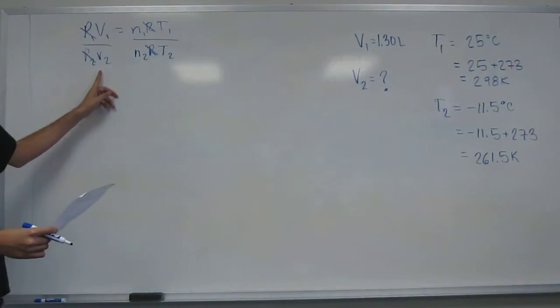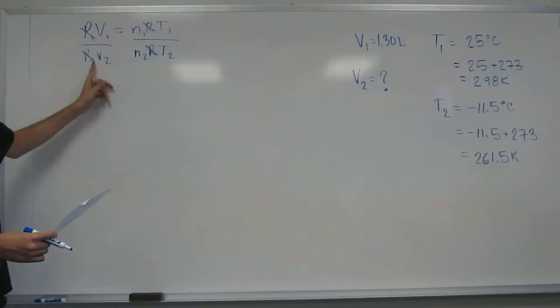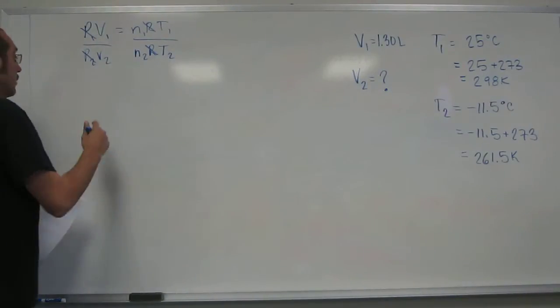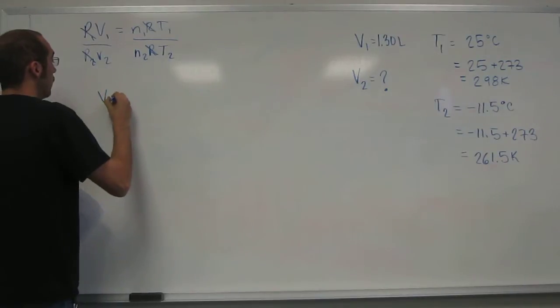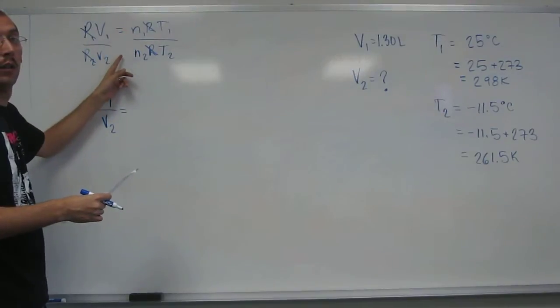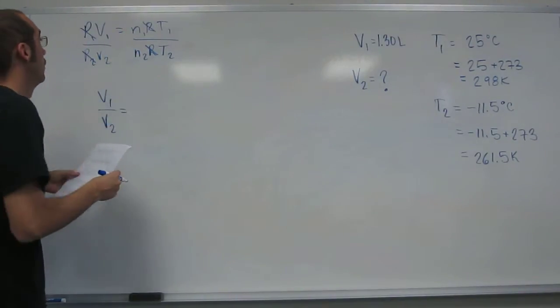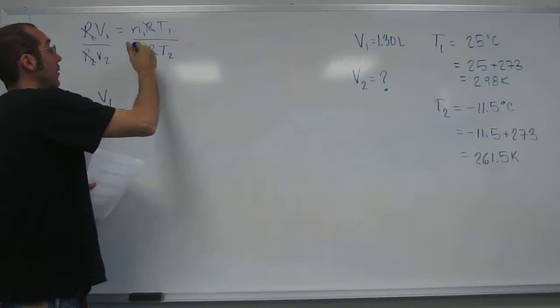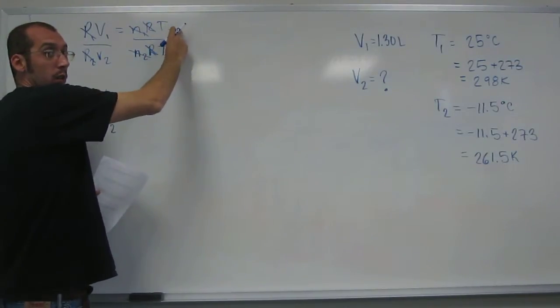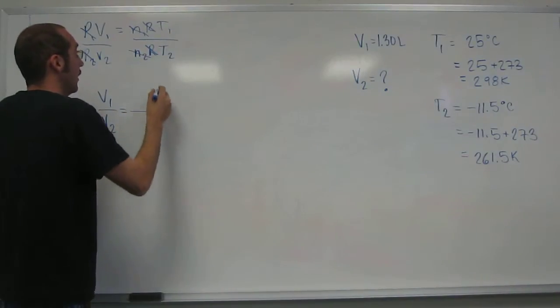Did the volume change? Yeah. So did our V1 and V2 different? Yeah. So we got to leave that like that. So let's bring those down. V1 divided by V2 equals. Did the number of moles change? No. So N1 equals N2, right? So we can cancel that. And did the temperature change? Yes.